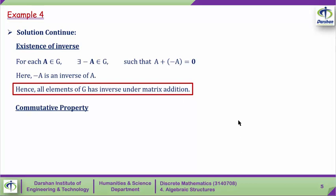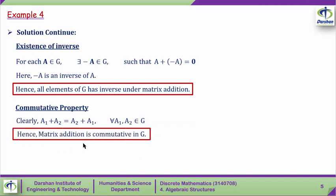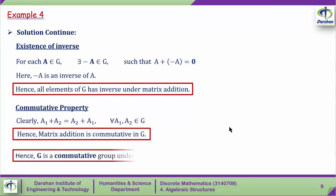The fifth property is commutativity. We know that clearly A1 + A2 equals A2 + A1 for any matrices from G. This property holds for every A1, A2 from G, hence matrix addition is commutative in G. Since all five properties are satisfied for G with matrix addition, G is a commutative group under matrix addition.